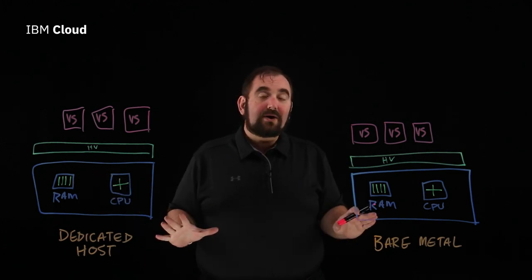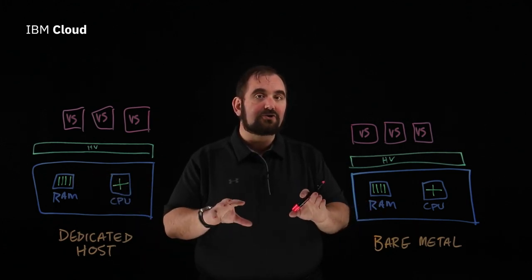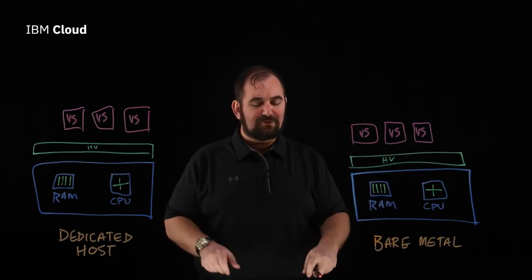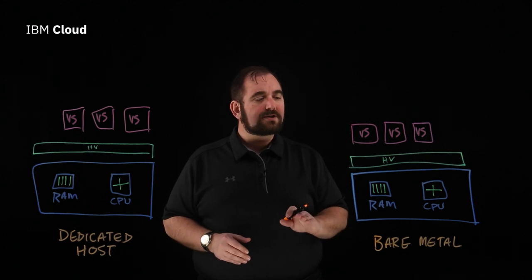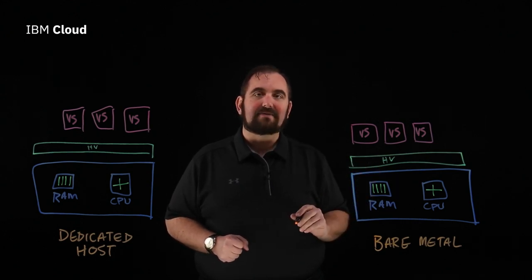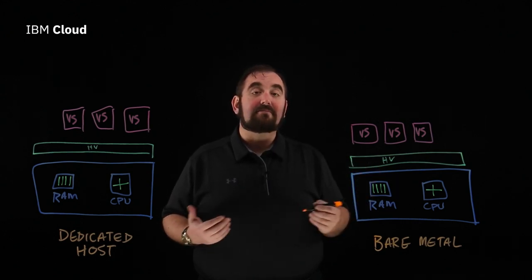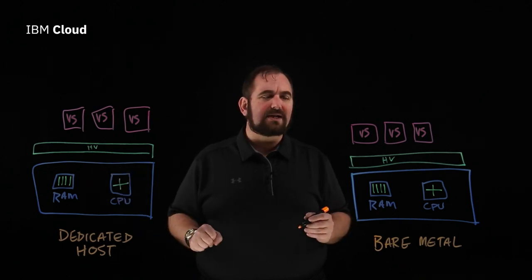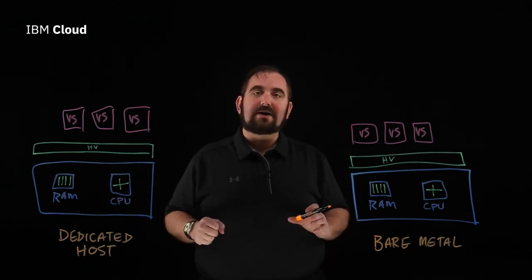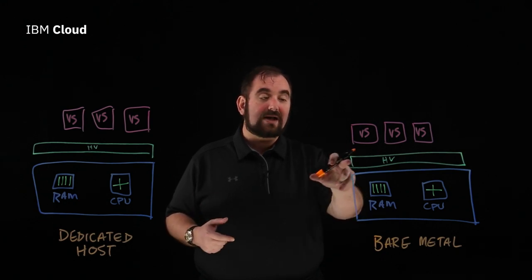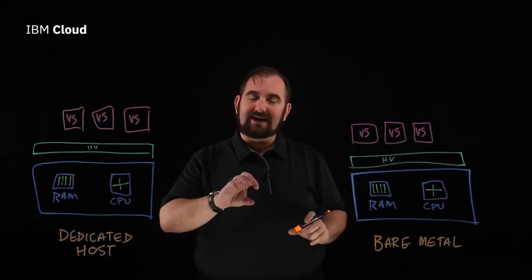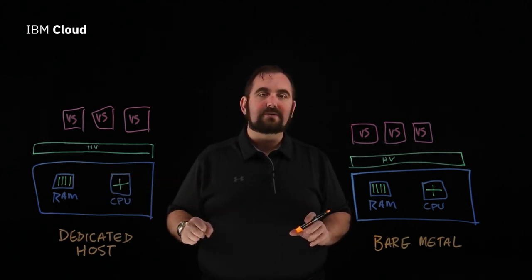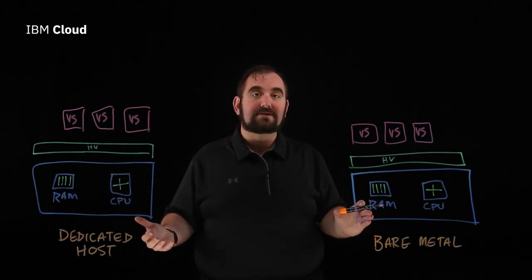On the dedicated host, we don't have the ability to let you control the level of overcommit. But when you run the hypervisor yourself, you make all those decisions. Also, having access to the hypervisor allows you to do monitoring and logging that cloud providers generally don't make available on dedicated hosts. It also allows you to back up your virtual machines directly through the hypervisor layer via its API, whereas on a dedicated host you have to use the cloud provider's APIs.